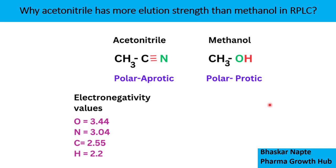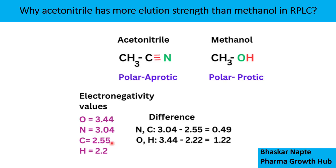Let us now compare the electronegativity values of the different atoms present in these two compounds. Oxygen has an electronegativity value of 3.44, nitrogen has 3.04, carbon has 2.55, and hydrogen has 2.2. What makes a bond polarized? The difference in electronegativity makes a bond polarized — the greater the difference, the greater the polarity of the compound. So we need to understand the difference in electronegativity between the key bonds in these molecules.